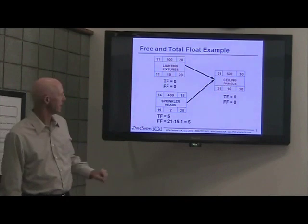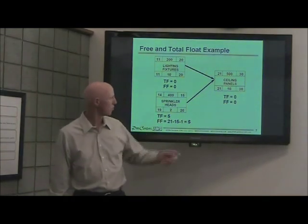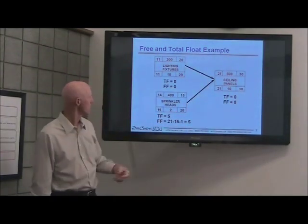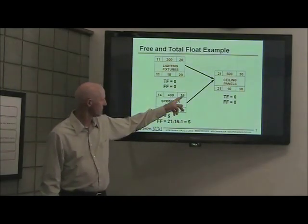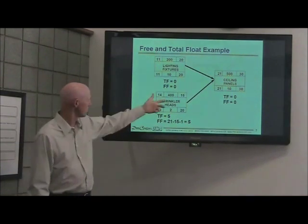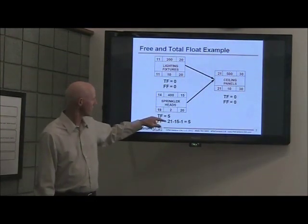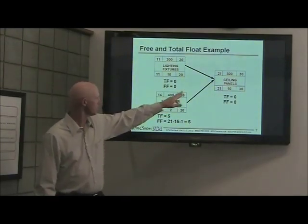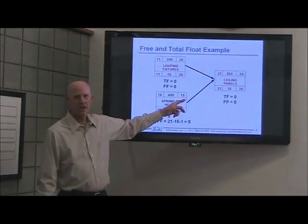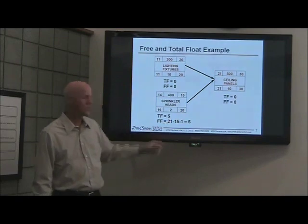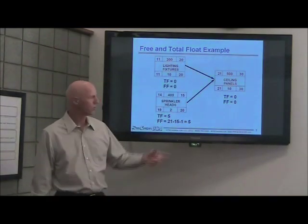Going back to the example — we're not showing the whole schedule, but looking at total float: it's zero here, 30 minus 30, or you could take 21 minus 21. The total float is zero, and it's also zero for the other tasks on that path. For sprinkler heads, it's 20 minus 15 — five days of total float. That means this path can delay up to five days without delaying the completion date. For free float: take 21, the early start of the successor, minus 15, the early finish of the task — that's six, minus one is five. So there are five days of free float for sprinkler heads. For lighting pictures, it's 21 minus 20, which is one, minus one is zero — there is no free float.